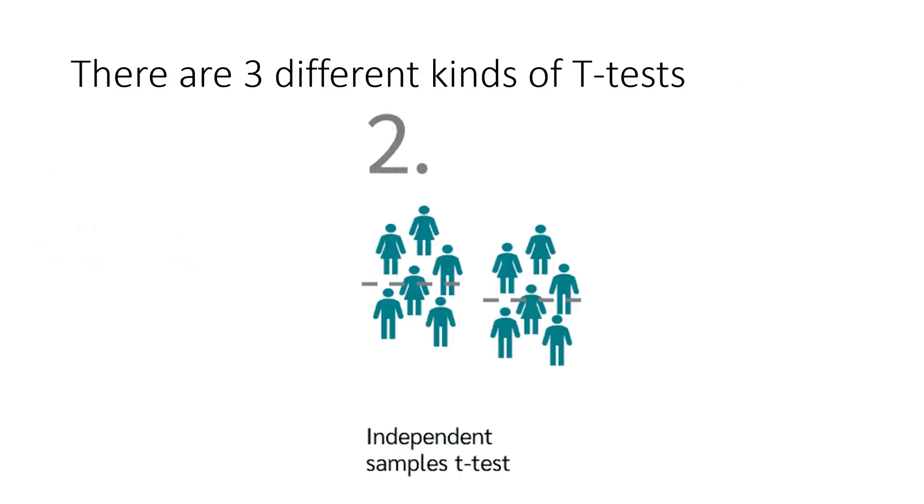The second T-test is the independent T-test. This is the T-test you would use if you are comparing two separate groups to each other. For example, male versus female, or smoker versus non-smoker, meditator versus non-meditator, luxury hotel guests versus standard hotel guests, people who like cilantro and people who think cilantro tastes like soap. You can compare any two groups that you like.